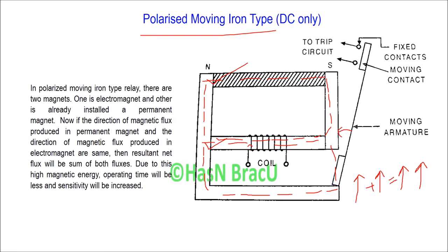This means the operating time will be less and sensitivity will be increased. On the other hand, if the direction of the magnetic flux produced by the permanent magnet and the direction of the magnetic flux produced by the electromagnet are opposite, the resultant flux will be decreased, and magnetic energy will be decreased. This means the polarized moving iron type relay will only operate if the direction of both fluxes are the same. This provides a directional feature of the relay, due to which the polarized moving iron type relay is basically used in DC systems.